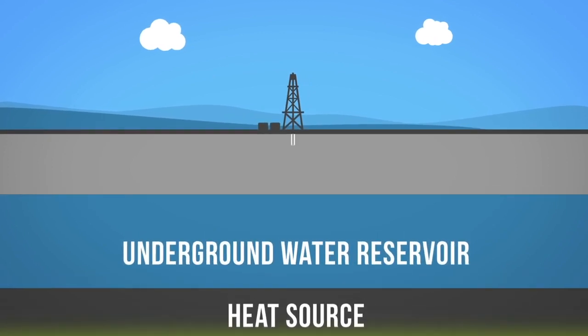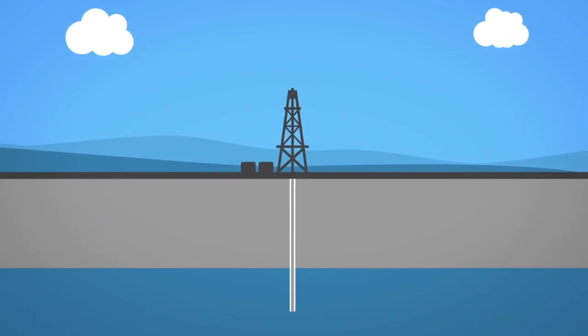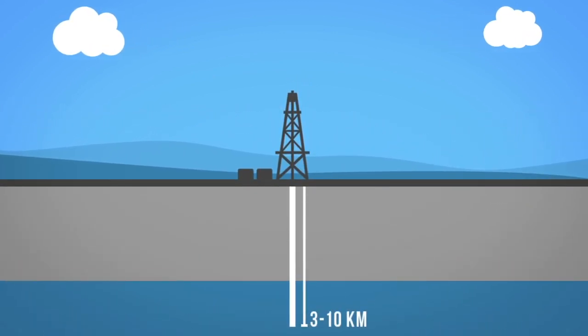Geothermal wells are drilled into the Earth's crust at approximately a depth of 3 to 10 kilometers. The heat is extracted with a variety of methods, but in most cases is drawn from the Earth using water and steam.